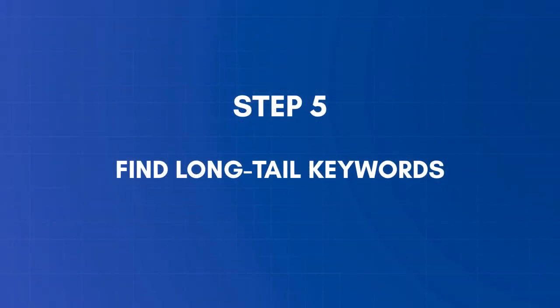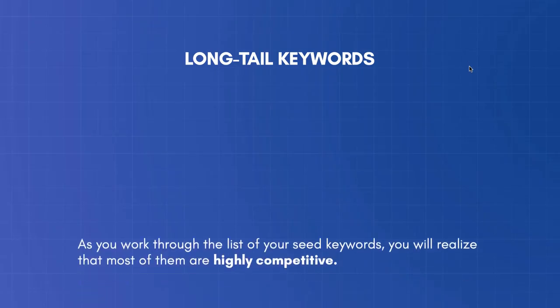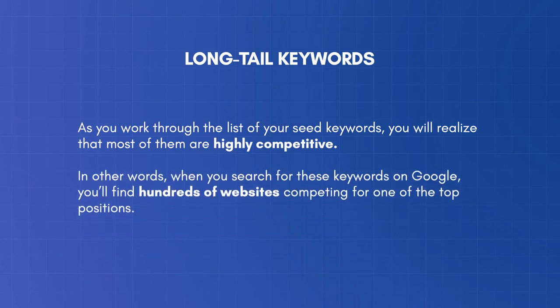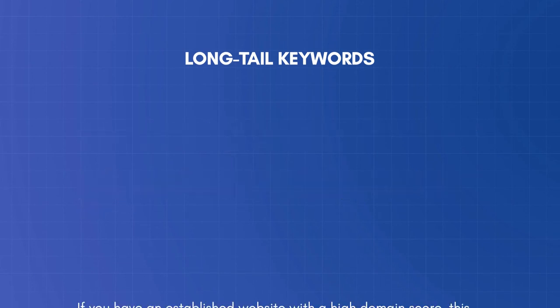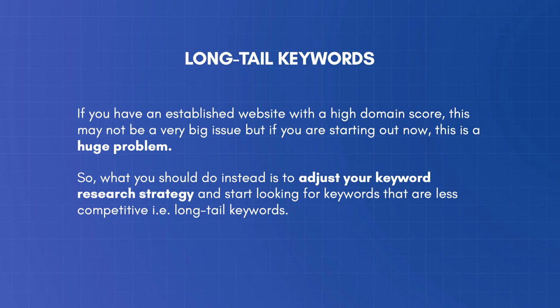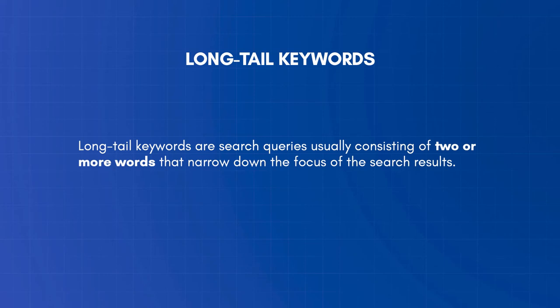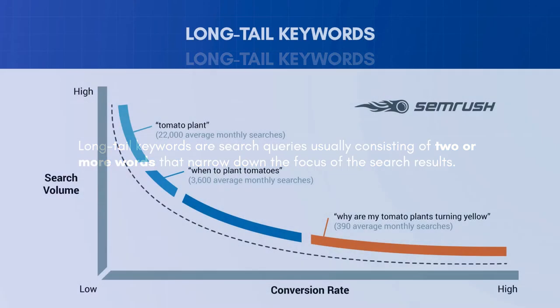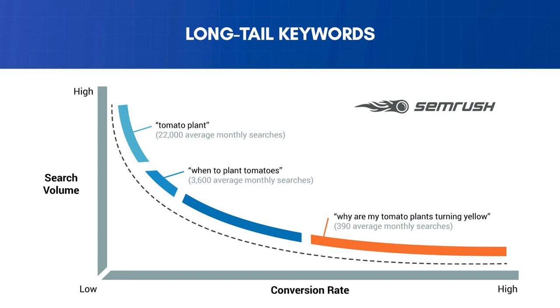Step 5: Find long-tail keywords. As you work through your seed keywords, you'll realize that most of them are highly competitive — hundreds of websites competing for top positions. If you have an established website with a high domain score, this may not be a big issue, but if you're starting out, this is a huge problem. What you should do instead is adjust your keyword research strategy and start looking for less competitive long-tail keywords. Long-tail keywords are search queries usually consisting of two or more words that narrow down the focus of search results, and they make up 70% of all searches — your best opportunity to start ranking high on Google for keywords that bring targeted traffic.